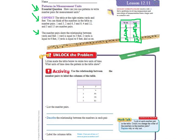The number pairs show the relationship between yards and feet. One yard is equal to three feet, two yards is equal to six feet, three yards is equal to nine feet, and so on. So that's an example of a pattern.